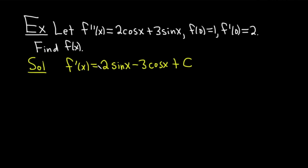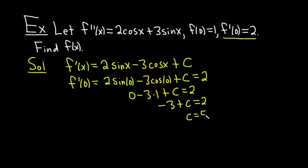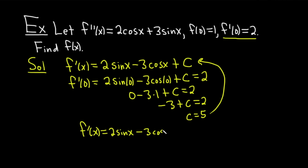Step one: antidifferentiate to get f prime. Now use your condition to find C. So f prime of 0 equals 2 sine of 0 minus 3 cosine of 0 plus C, and that equals 2. Sine of 0 is 0, so we get 0 minus 3 times 1 plus C equals 2. So negative 3 plus C equals 2, meaning C equals 5. Then plug C back in: f prime of x equals 2 sine x minus 3 cosine x plus 5.